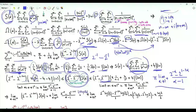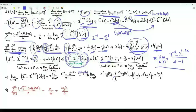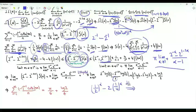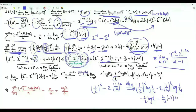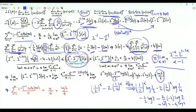We have a 0/0 situation, so we apply L'Hôpital's rule. The denominator differentiates to 1. The numerator is (1/2)^α − 2·(1/4)^α. Differentiating with respect to α gives (1/2)^α · log(1/2) − 2·(1/4)^α · log(1/4). At α = 1 this is (1/2)(−log 2) − (2/4)(−log 4) = −log(2)/2 + log(2) · (2/4 · 2) ... simplifying: log 2 − (1/2)log 2 = log(2)/2.